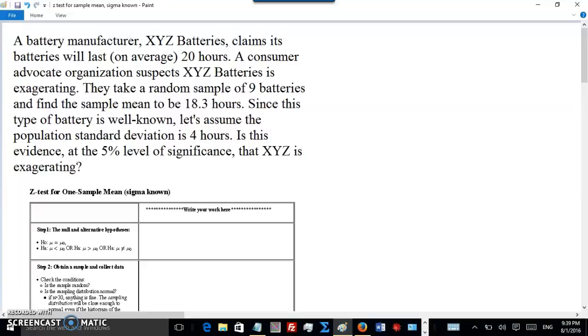First, let's look at some of these numbers. We have nine batteries in a sample, so n equals 9. We have sample mean is 18.3 hours, so x̄ = 18.3 hours. And we have a population standard deviation, σ = 4 hours. Usually you don't know the population standard deviation, but in this example we do. Both mean and standard deviation are in units of hours.